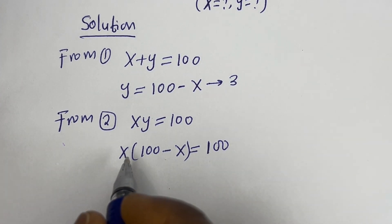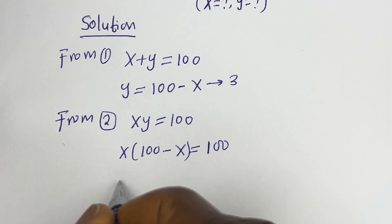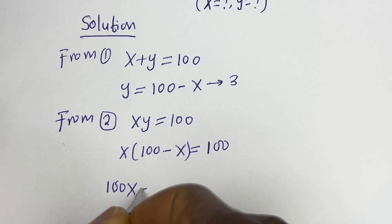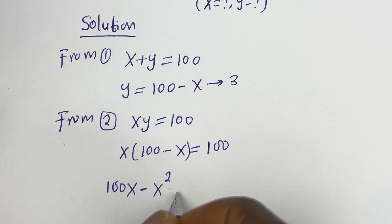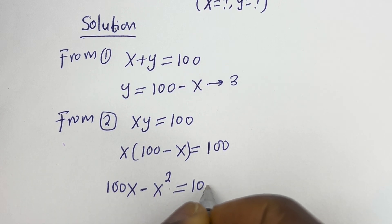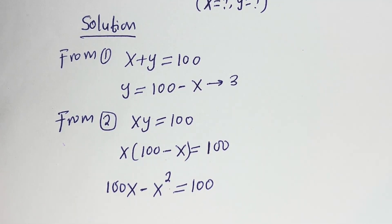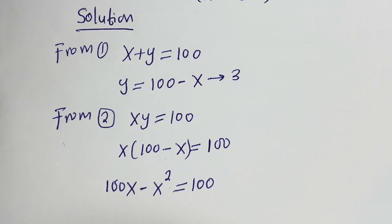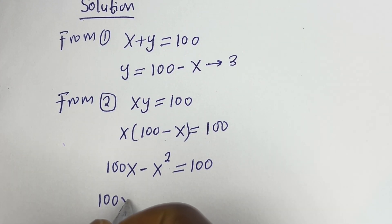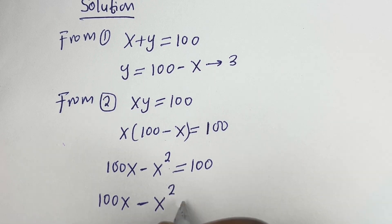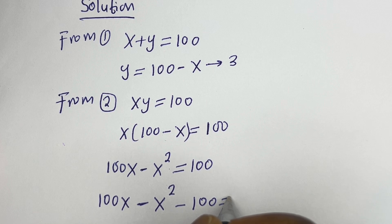Let's open the bracket: x multiplied by 100 is 100x, minus x multiplied by x is x squared, equals 100. So we have 100x minus x squared minus 100 is equal to 0.